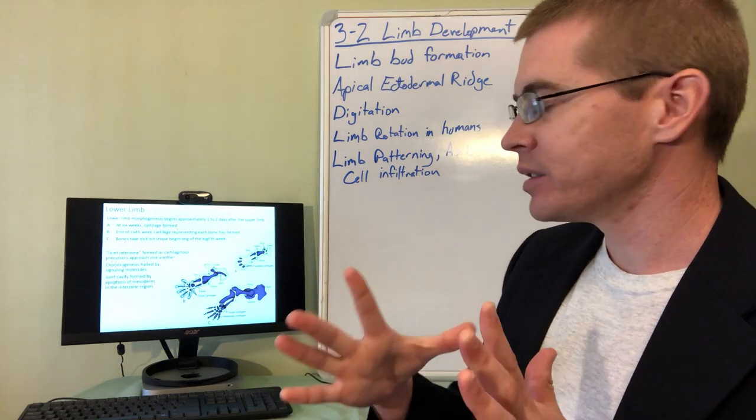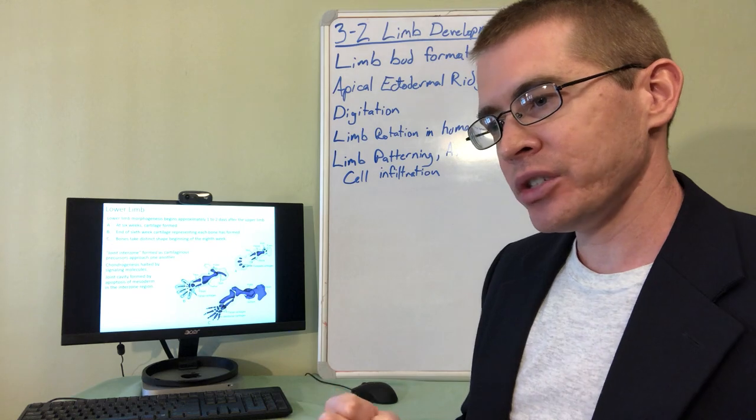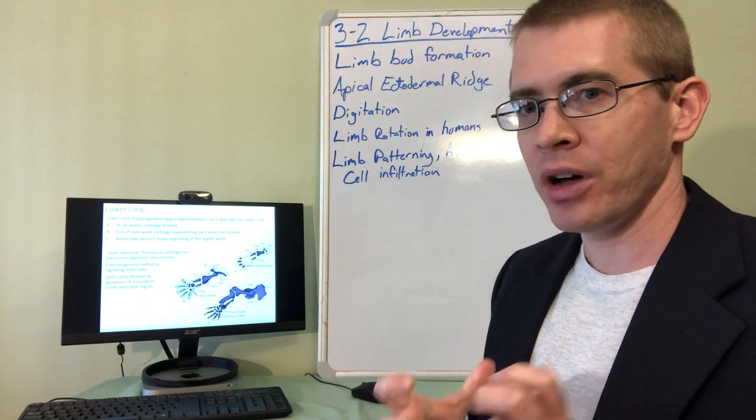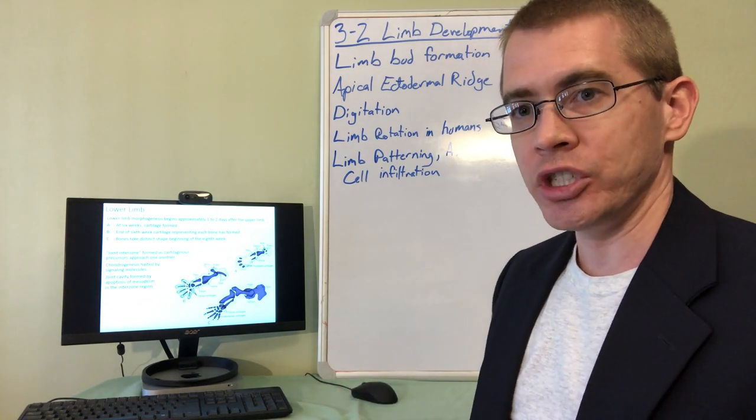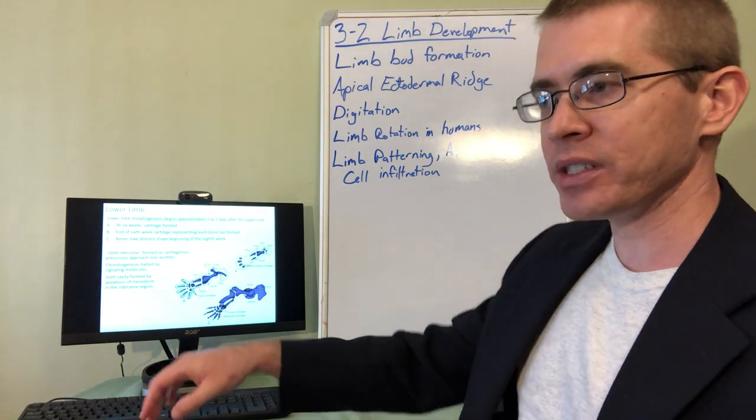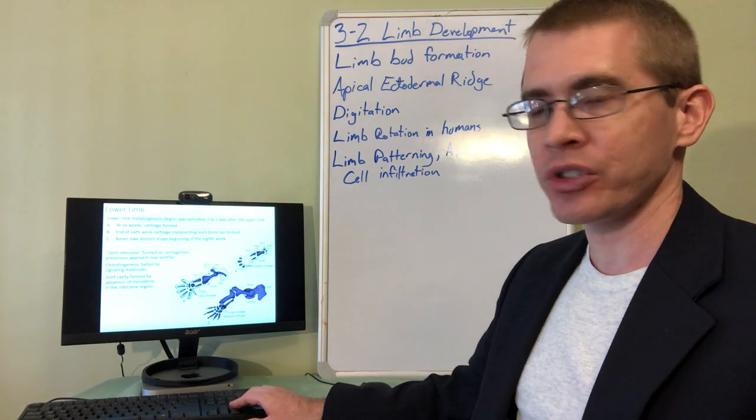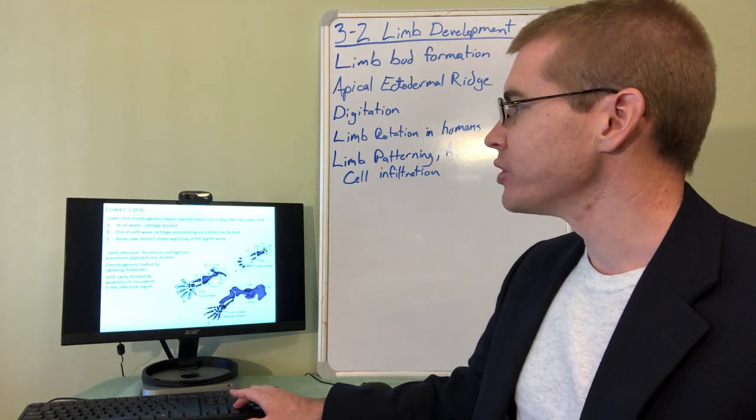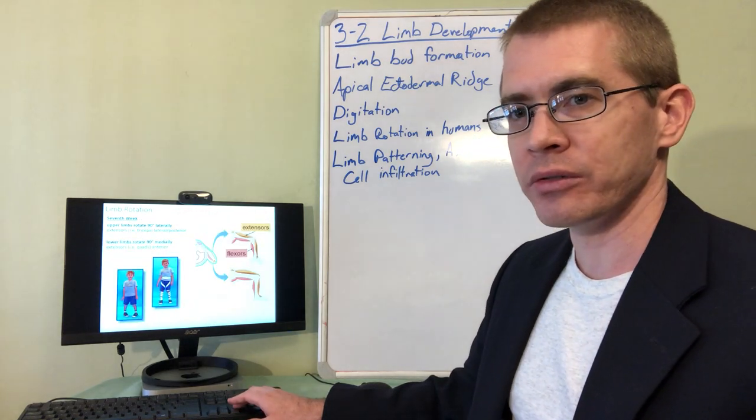And that signaling mechanism causes chondrogenesis to halt and causes the formation of the joints between the bones, the synovial joints and the specialized cells within those joints that form the synovial fluid. So this is called the joint interzone region.